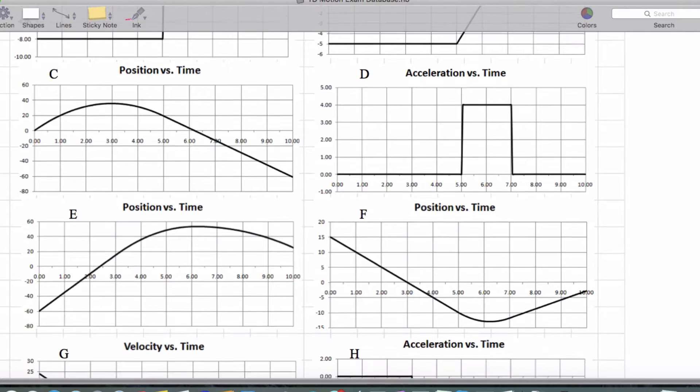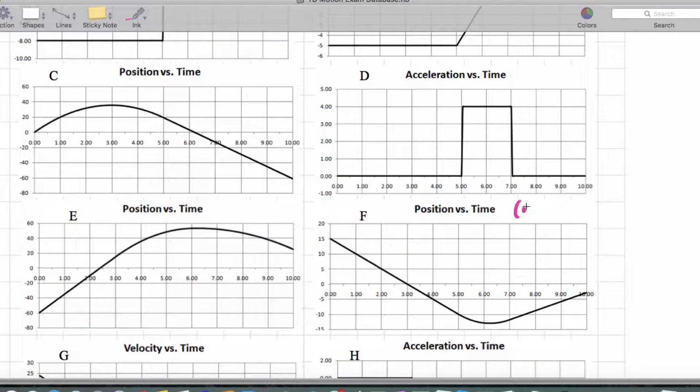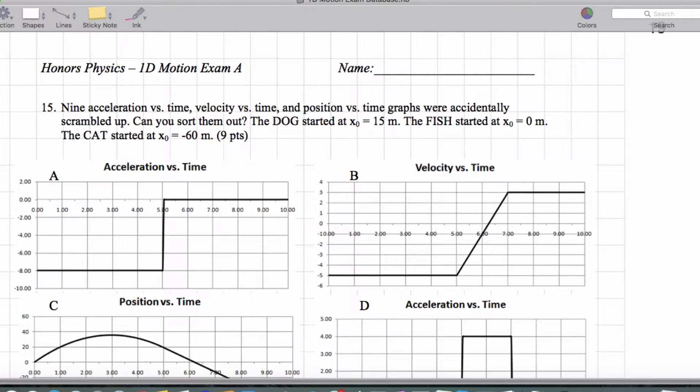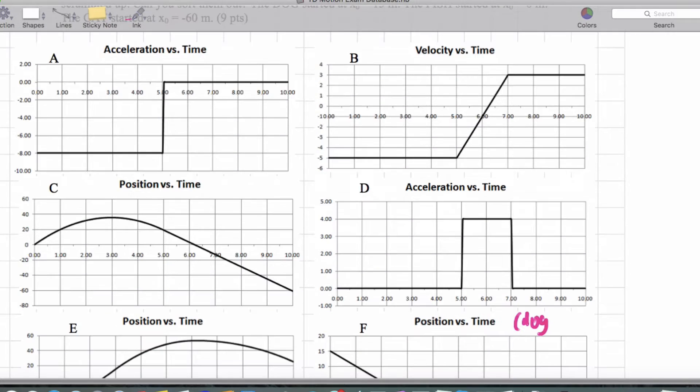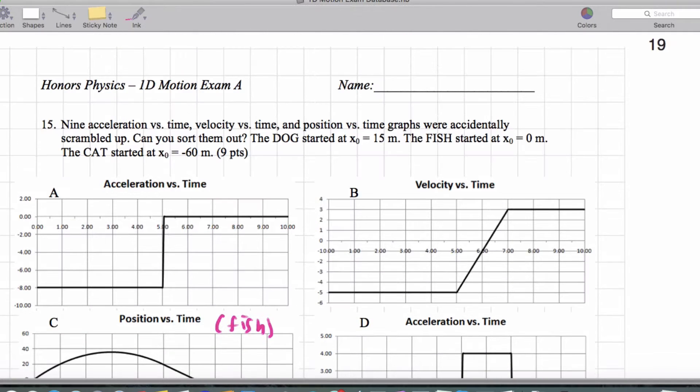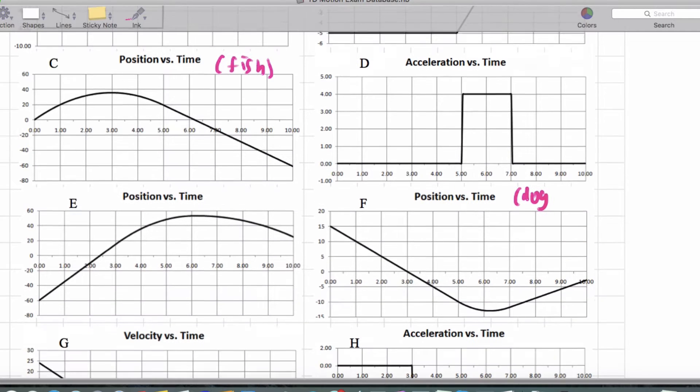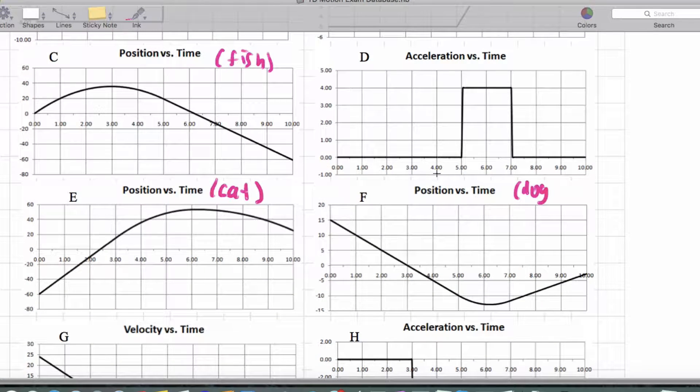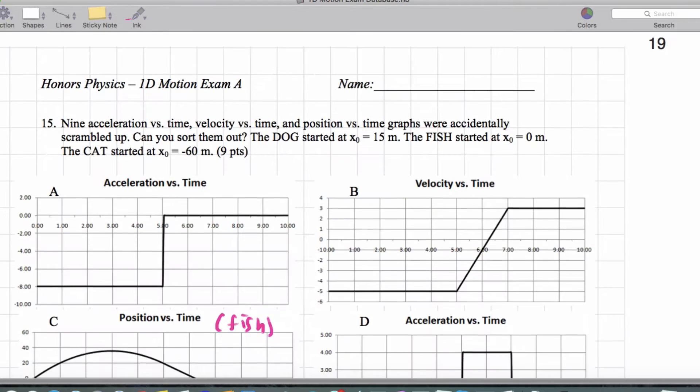For the dog, this is clearly the dog. And the fish starts at zero meters, so this would be the fish. And the cat starts at negative 60 meters down here. So we've got those labeled, excellent.